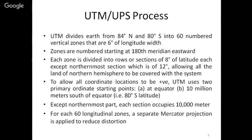Now let us come to the UTM/UPS process. UTM divides the earth from 84 degrees north to 80 degrees south into 60 numbered vertical zones, each 6 degrees of longitude wide. Zones are numbered starting at the 180th meridian eastward. Each zone is divided into rows or sections of 8 degrees of latitude, except the northernmost section which is 12 degrees. To allow coordinate locations to be positive, UTM uses two primary ordinate starting points: the equator, and 10 million meters south of equator.